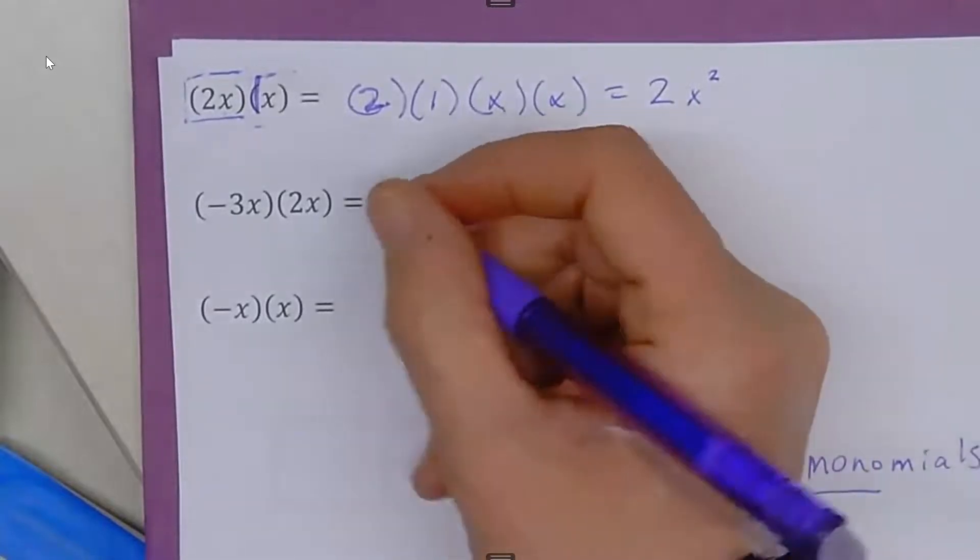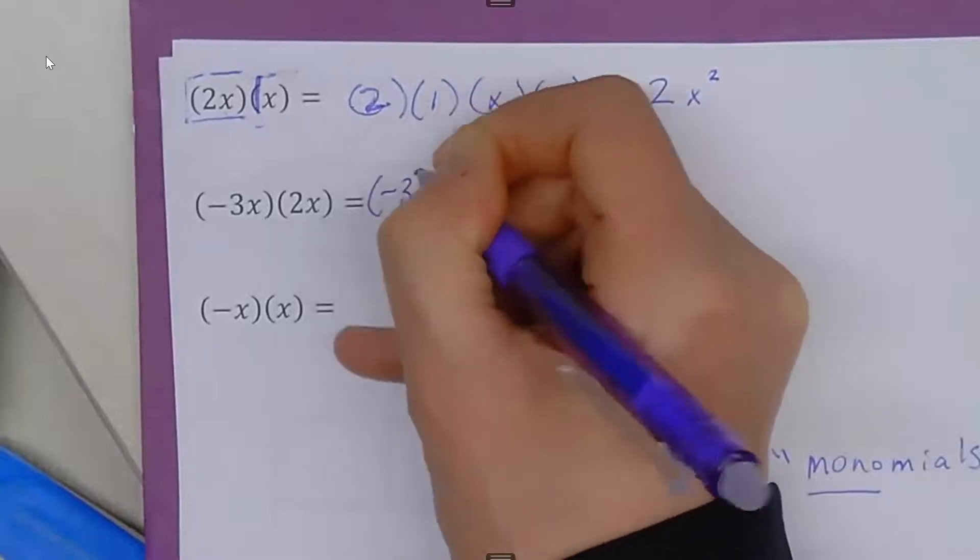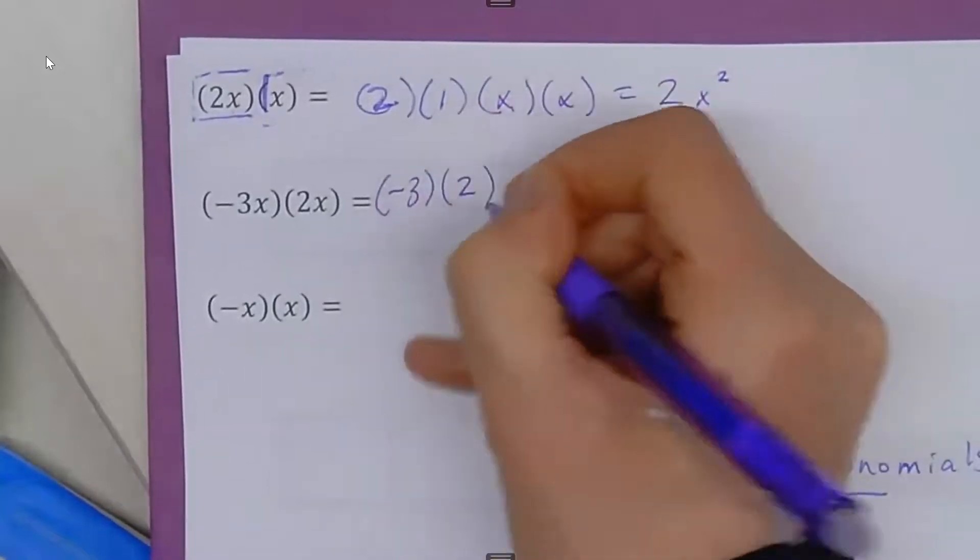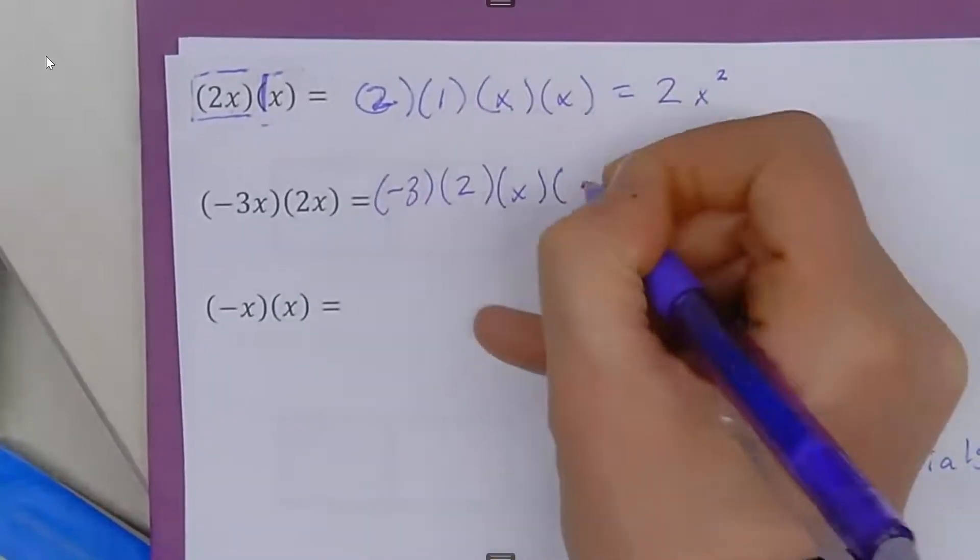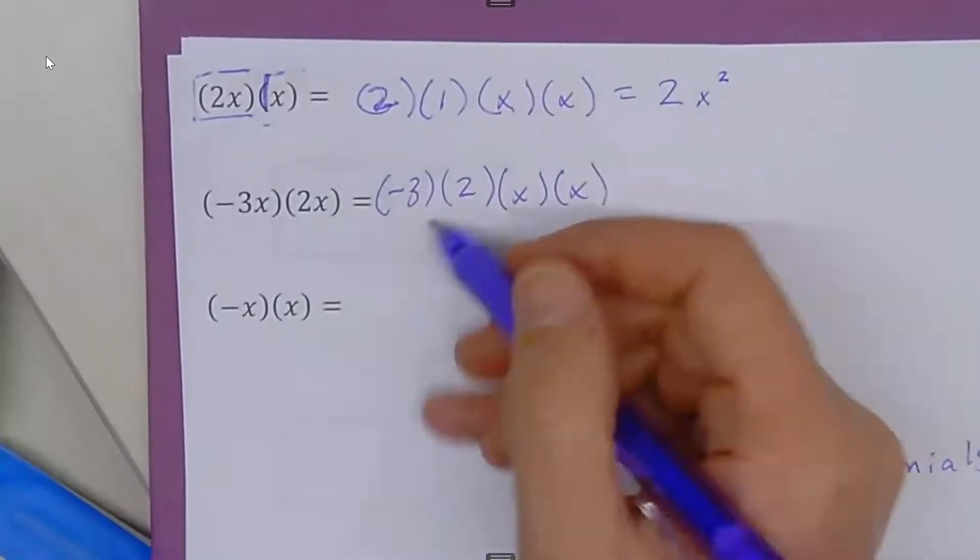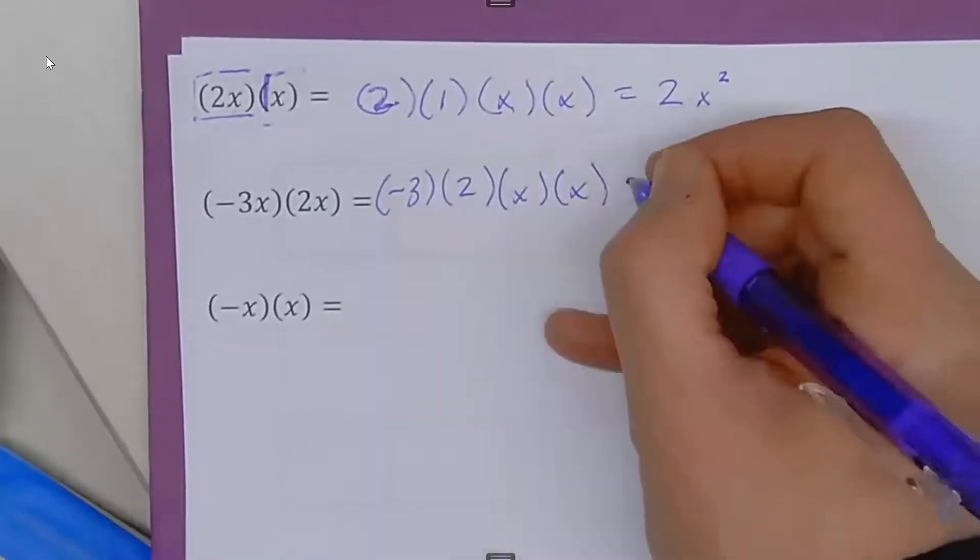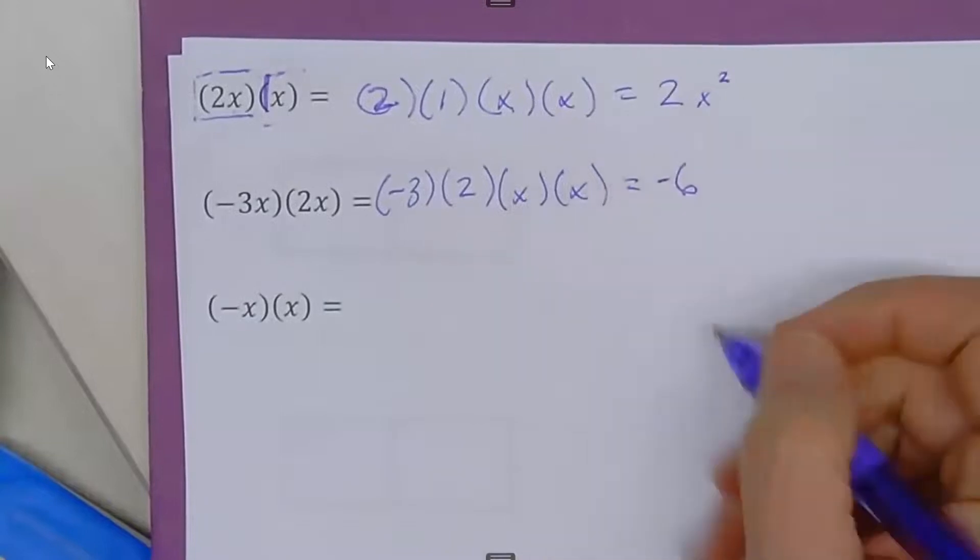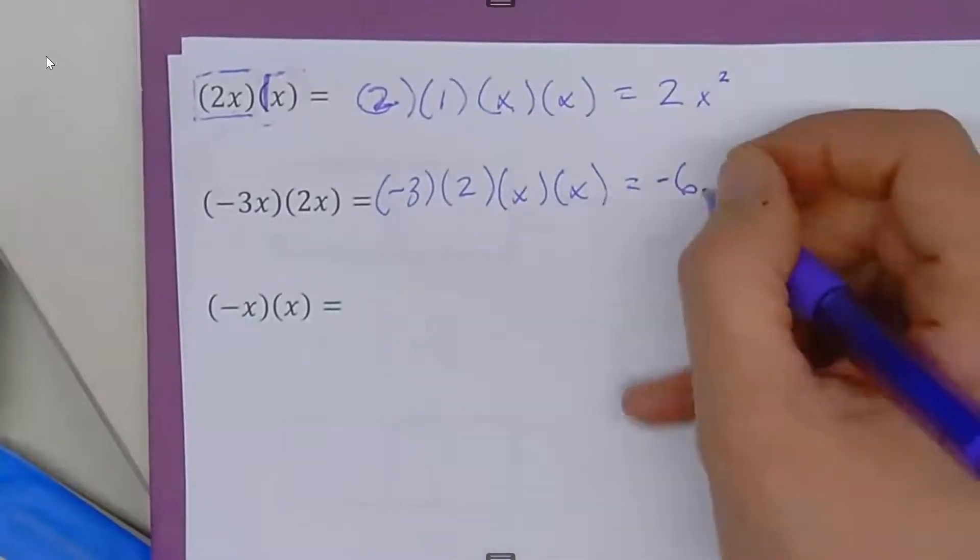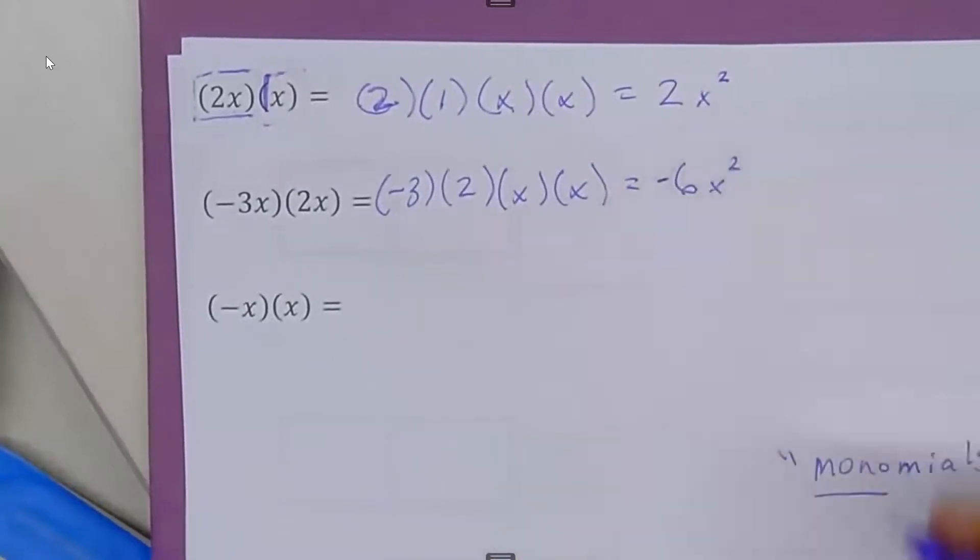In this next example, we have negative 3 times 2 times x times x. Negative 3 times 2 equals negative 6. Then x times x is x to the second power, or x squared.